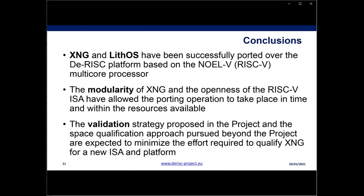We started with the Zynq 7000 space qualification currently implemented in a project managed by CNES. When that qualification is halfway, we can start Leon 4 qualification of XNG. Depending on market demands we can have different qualifications in parallel in the pipeline. SPARC V8 is one space qualification needed, Leon 5 is another where the chip and platform are available, and RISC-V can be tackled towards the end of the D-RISK project.